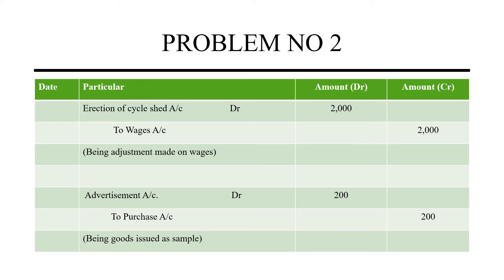The next one is: wages include a sum of Rs. 2000 spent on the erection of a cycle shed for employees. This amount goes toward capital expenditure for the cycle shed — it is a fixed asset. The entry is: erection of cycle shed account debit to wages account. Debit what comes in — which is entering into the erection of cycle shed — and credit what goes out, which is wages.